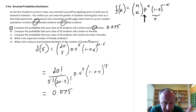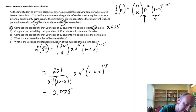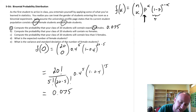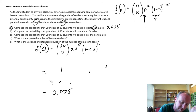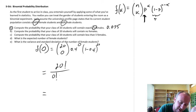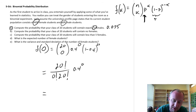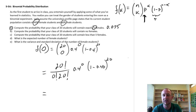Now let's go through the other possibilities. Part B: compute the probability that your class of 20 will contain no females. I'm going to change these values: 20 choose 0 successes. This becomes 20 factorial over 0 factorial times 20 factorial, which is just 1. And 0.4 to the power of 0 is also just 1. So all this really is, is 0.6 raised to the power of 20 — that means 20 consecutive failures, no females.